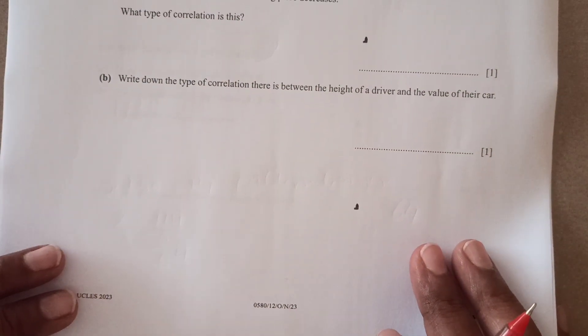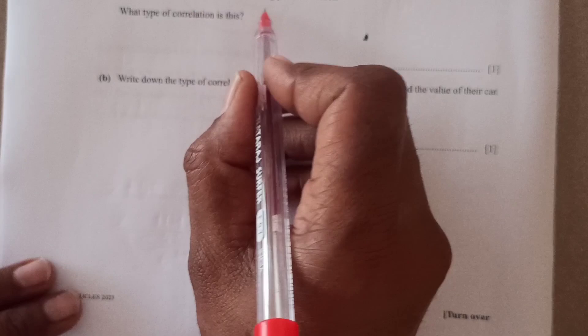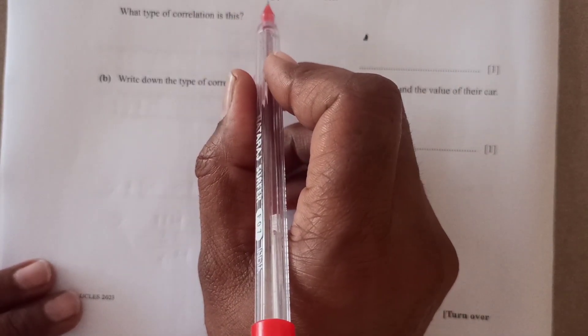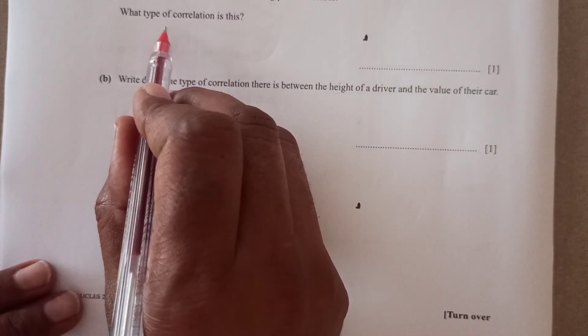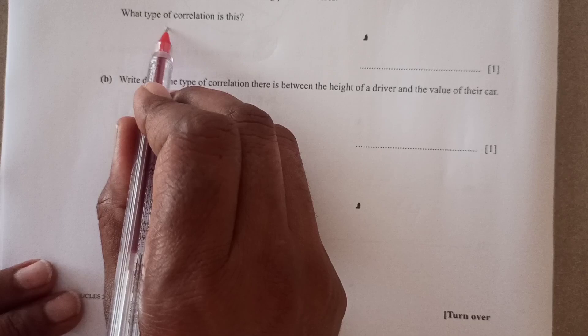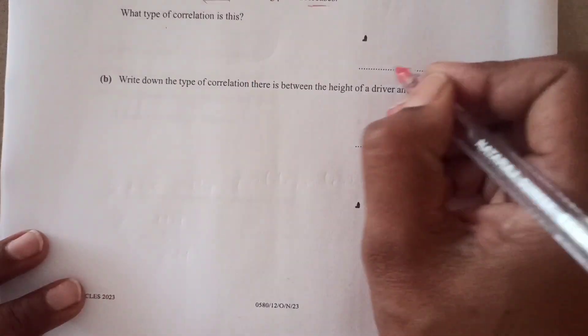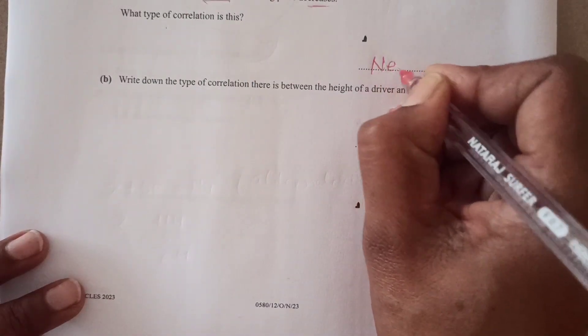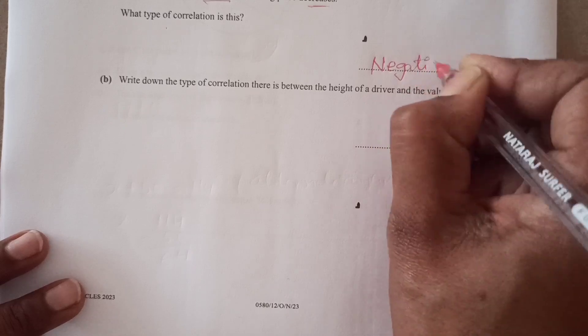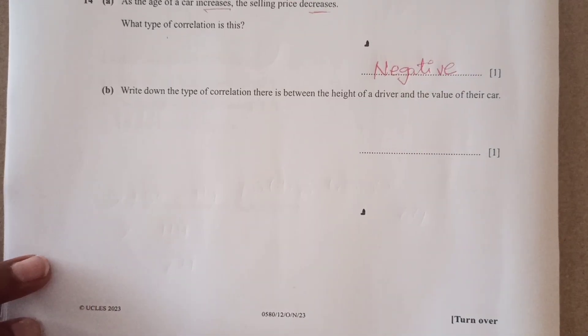Now number 14, as the age of car increases, the selling price decreases. What kind of correlation is this? So if one is increasing, other one is decreasing, so that means this is a negative correlation. We are just going to write down negative here, right?